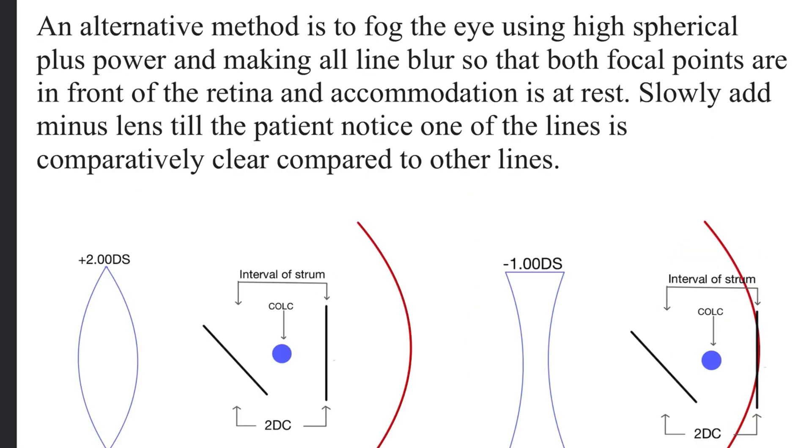An alternative method is that you show the astigmatic chart to the patient and place a high plus lens, making all lines blur so that both focal points are in front of the retina and the accommodation is addressed. As we have done in this case where we have plus two, it has brought both of these foci in front of the retina.